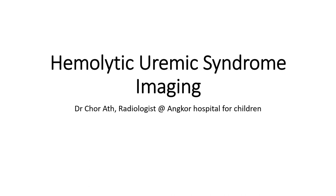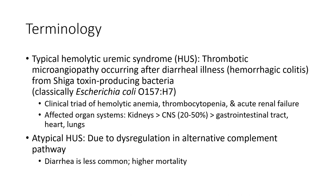Hello everyone, today I'm going to show you about hemolytic uremic syndrome imaging. Terminology: typical hemolytic uremic syndrome is a condition of thrombotic microangiopathy occurring after diarrhea-induced hemorrhagic colitis from Shiga toxin-producing bacteria, classically. History here for clinical trial of hemolytic anemia.